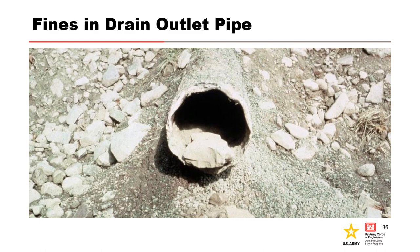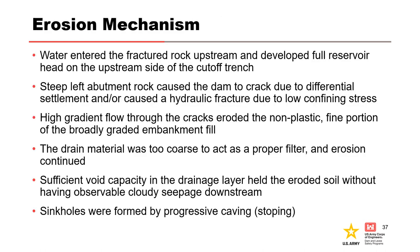The cavities were enlarged upward by caving of the ceiling, or stoping. In summary, the erosion mechanism involved water entering the fractured rock upstream and developing full reservoir head on the upstream side of the cutoff trench. The steep left abutment caused the dam to crack due to differential settlement and/or hydraulic fracture due to low confining stress. High gradient flow through the cracks eroded the non-plastic fine portion of the broadly graded fill, the drain material was too coarse to act as a proper filter, and sufficient void capacity in the drainage layer held the eroded soil without producing observable cloudy seepage downstream. Finally, sinkholes were formed by progressive caving or stoping.